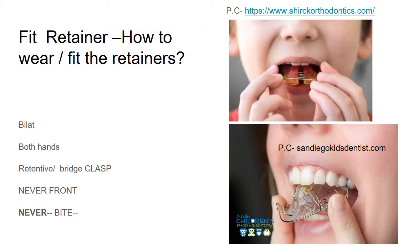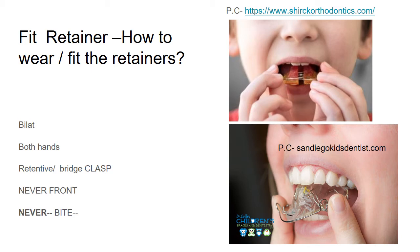The first and foremost instruction is how to wear the retainer. Use both hands — the thumb and index finger on each side — to hold the bridge of the Adams clasp or whichever clasp is used. Position it bilaterally into the mouth and then press it upwards. A common mistake is that patients position the retainer by holding the front wire, the labial wire.